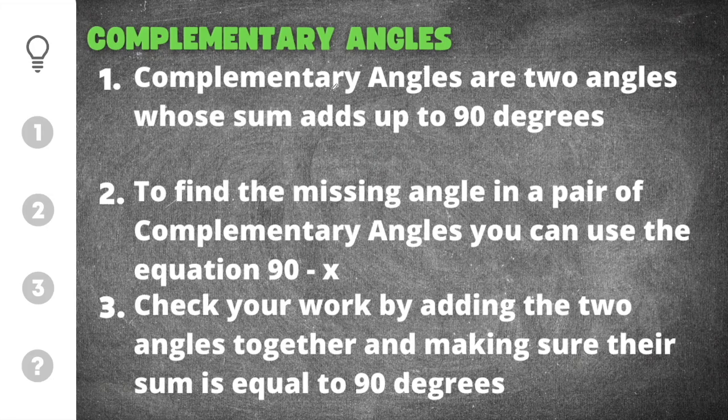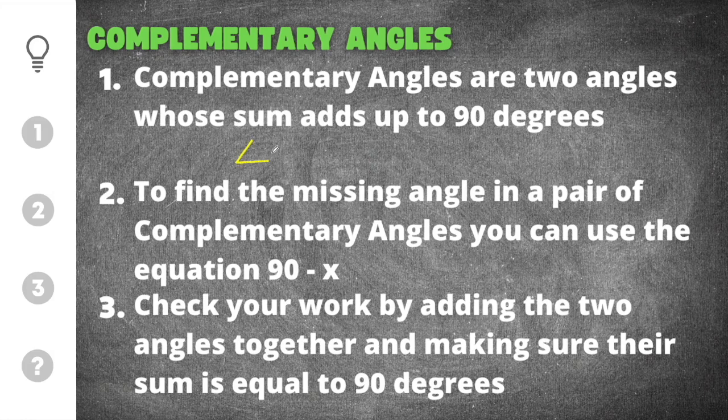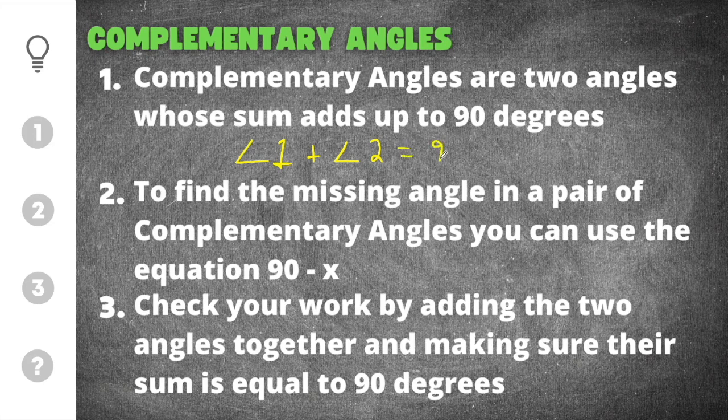So the first thing we need to know is that complementary angles are two angles whose sum adds up to 90 degrees. This means that the measure of the first angle plus the measure of the second angle will equal 90 degrees.